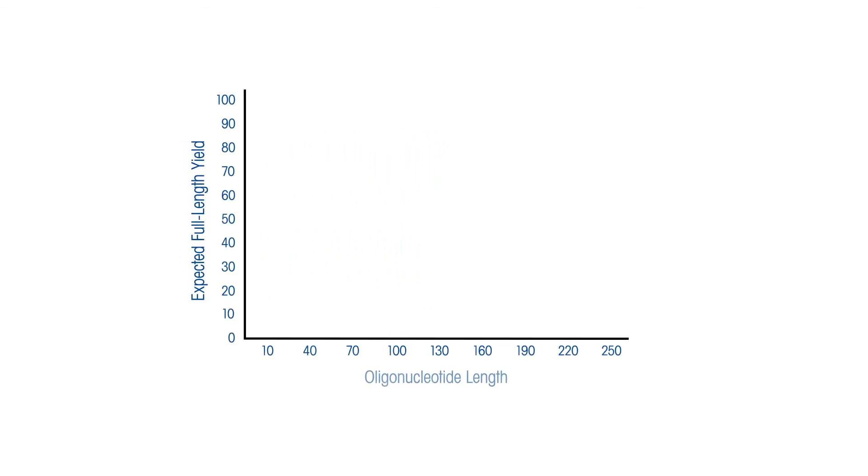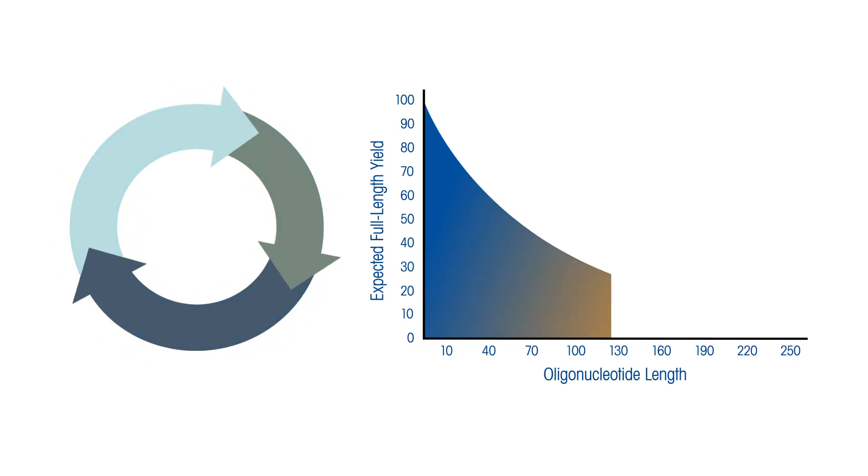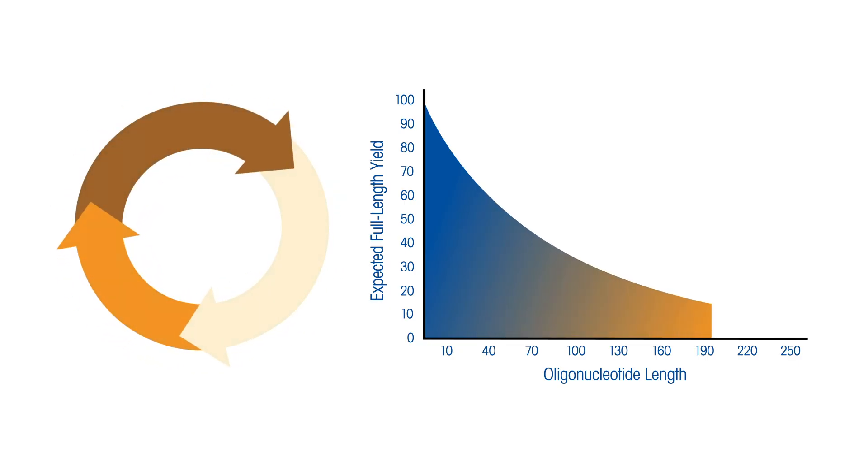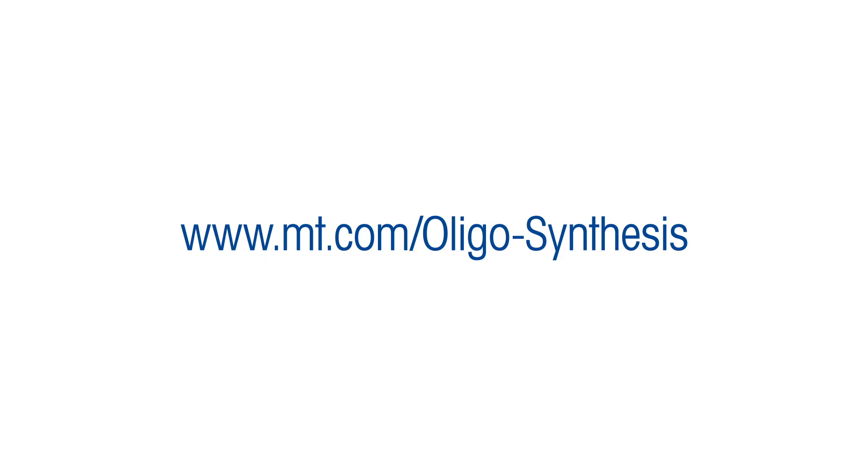Because of the typical methods used in oligonucleotide synthesis, the longer and more complicated the nucleotide sequence, the more difficult it is to meet yield, purity, and cost objectives. To learn more about the optimization of oligonucleotides using PAT technology, visit mt.com slash oligo dash synthesis.